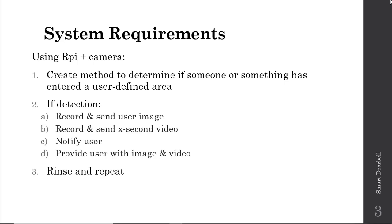We'll upload those images for the user. If we've got a detection, we'll record the images and then record an X-second-long video — I typically use something like 30 seconds. There are certainly more elegant ways of determining how long to record the video, but in this lecture series we're going to do an introductory look at how we tackle this smart doorbell with the Raspberry Pi.